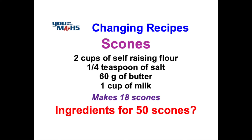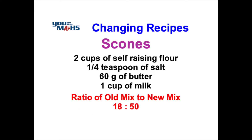So what if we want to make 50 scones? How do we change it? We know that we're going to have more of each of the items, but how much more? What we do is create a ratio — a ratio of the old mix to the new mix, or in this case 18 scones to 50 scones — and we use that to work out our scale factor, in other words how much everything changes.